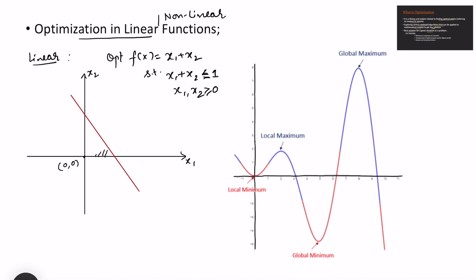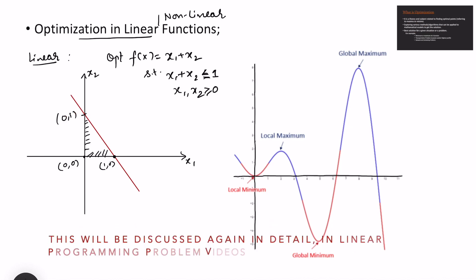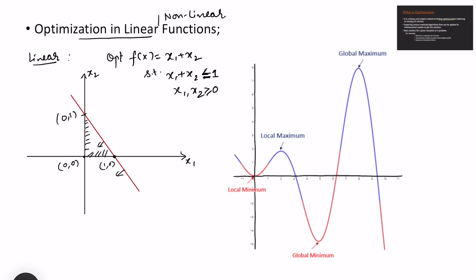The decision variables are non-negative, meaning the points are in the first quadrant. This is a straight line passing through the point (1, 0) and (0, 1). Since the inequality is less than or equal to 1, the feasible region is the lower side — altogether this triangular region is where I want to maximize the value, and we can see the maximum value occurs at a corner point.